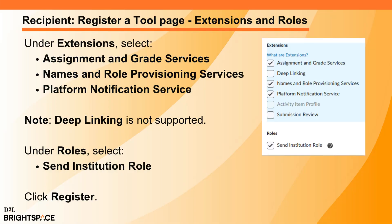Under Extensions, select Assignment and Grade Services, Names and Role Provisioning Services, and Platform Notification Services. Note that deep linking is not supported in this context. Under Roles, select Send Institution Role, then click Register.